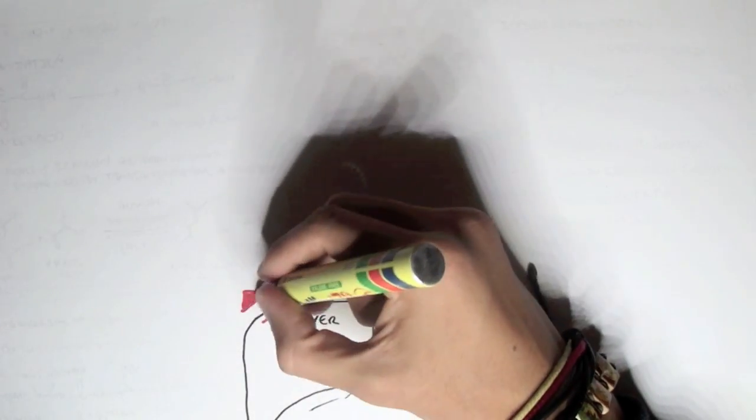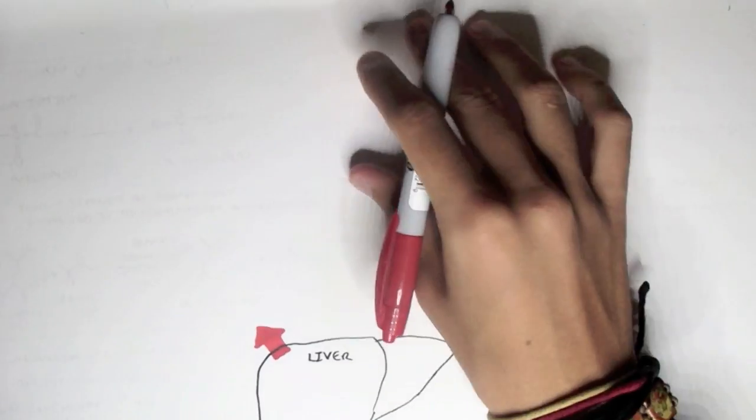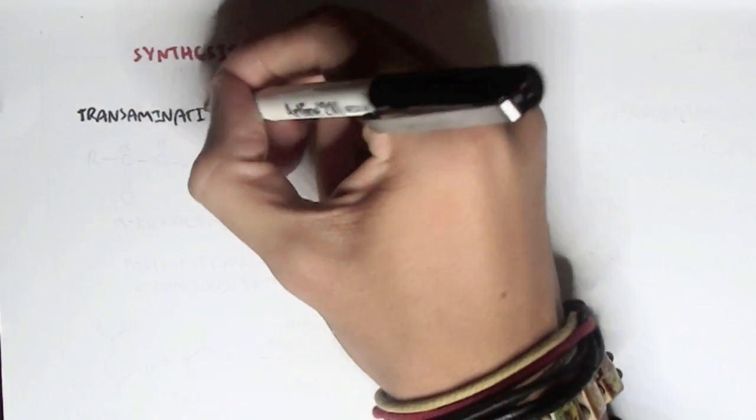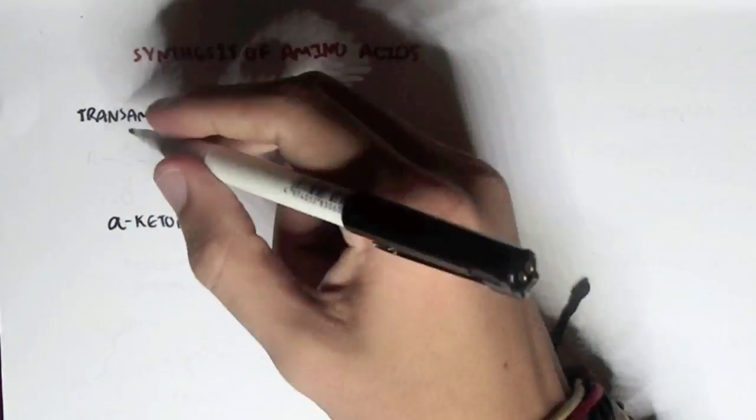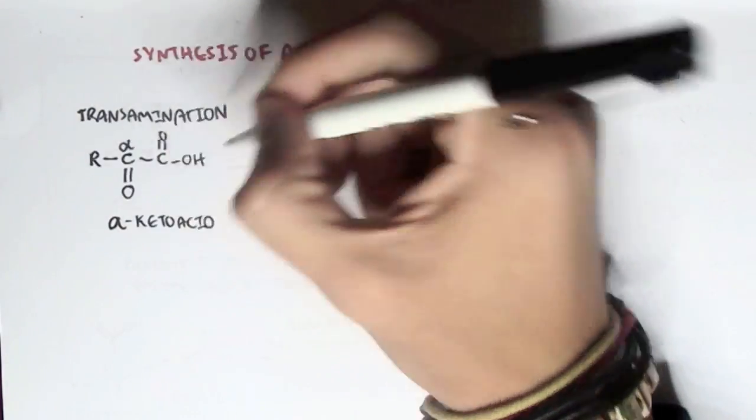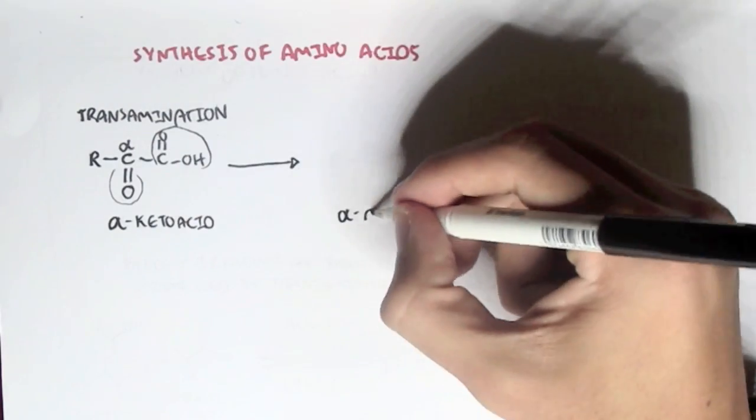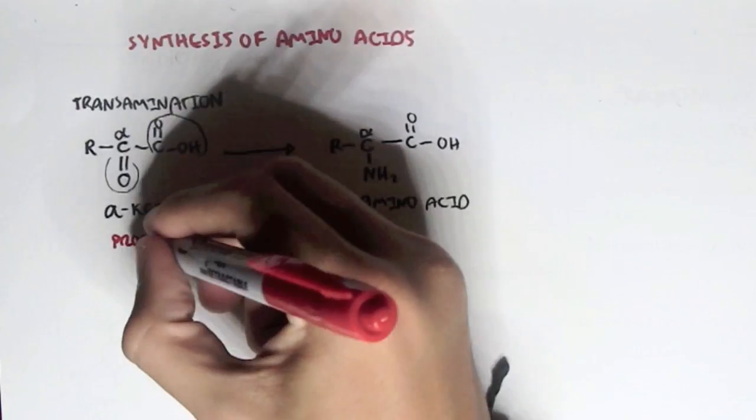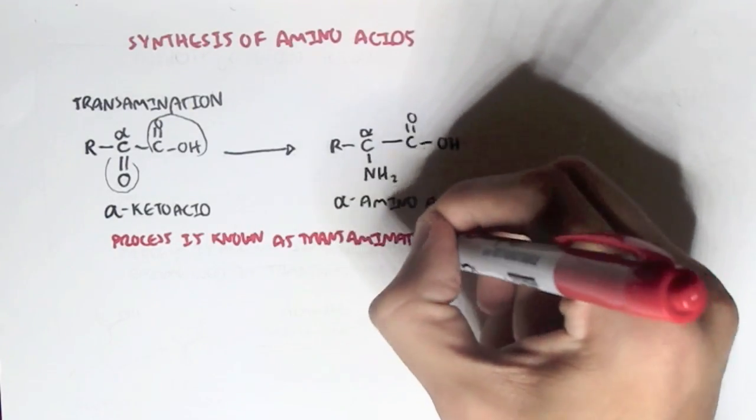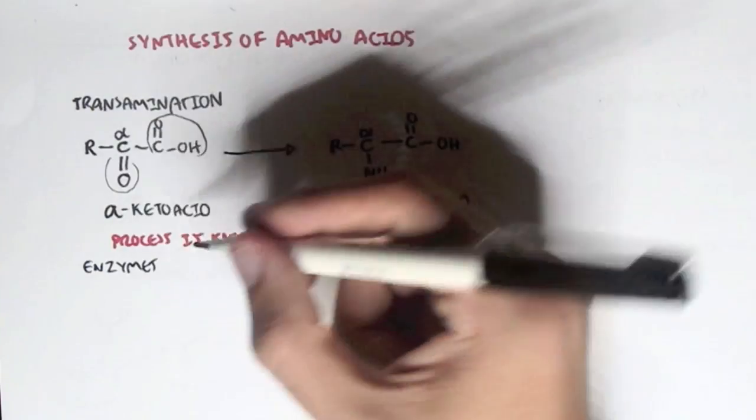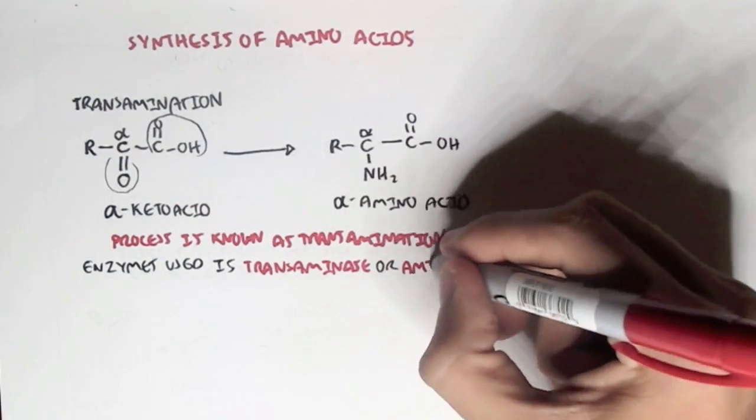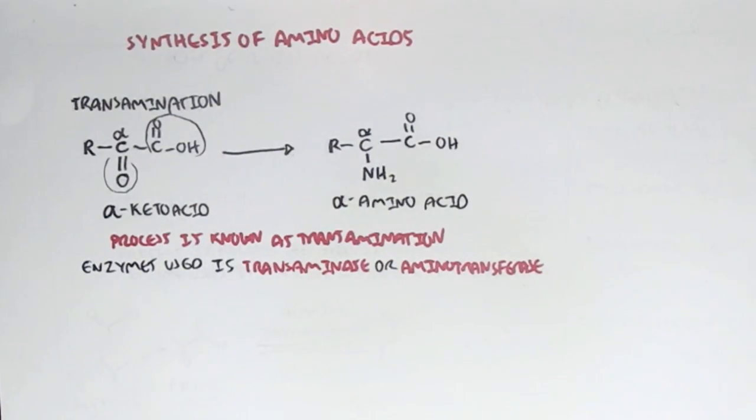First of all, it can synthesize amino acids. One of the processes is called transamination, where we have an alpha-keto acid, which is an alpha-carbon with a keto group and a carboxyl group, which can get converted into an alpha-amino acid, where the alpha-carbon has an amino group and a carboxyl group. The enzyme used is usually known as transaminase or aminotransferase.